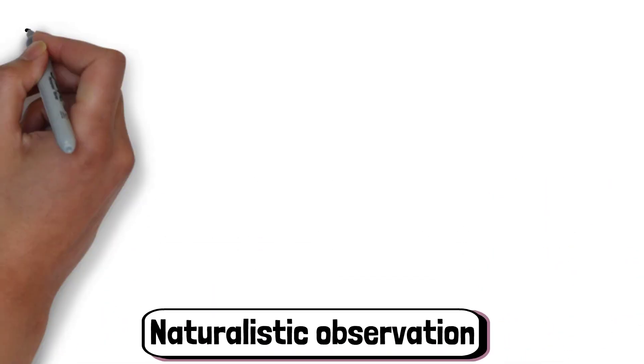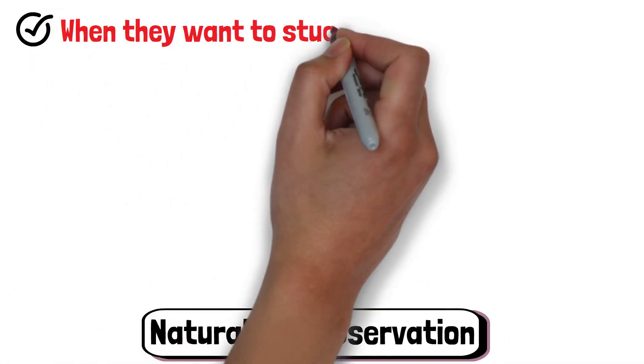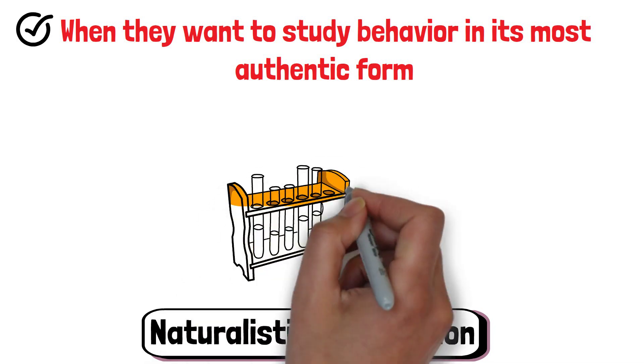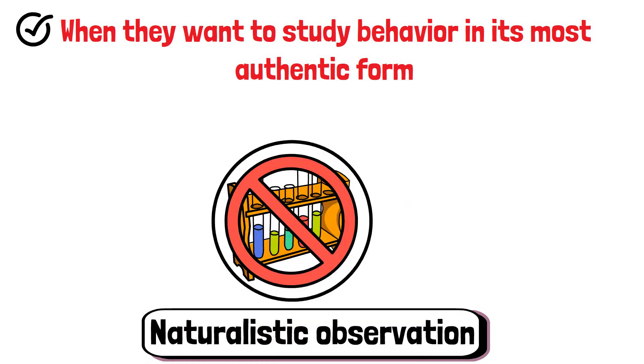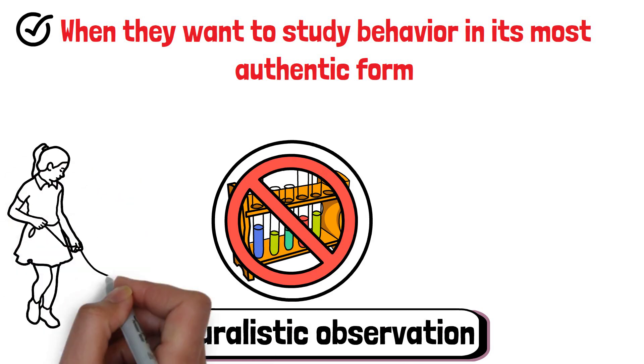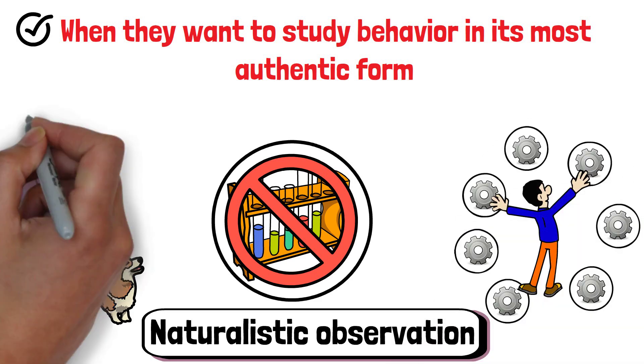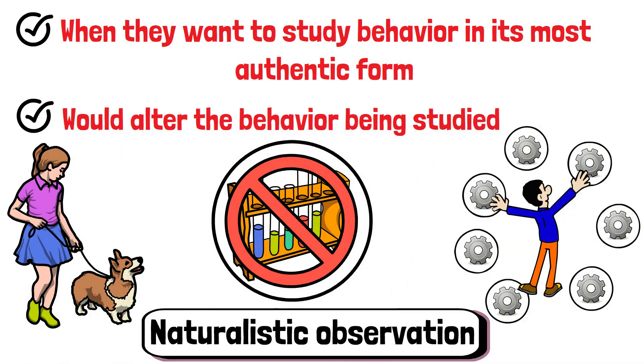Researchers use naturalistic observation when they want to study behaviour in its most authentic form without the influence of a lab or experimental setting. This method is especially useful when the goal is to understand how people or animals act in everyday situations, where controlling variables would not be practical or would alter the behaviour being studied.